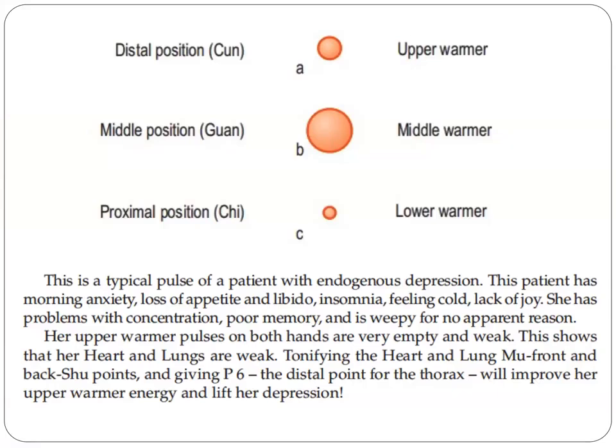Let's take a look at the figure. As you can see, we divide the positions into three warmers: upper warmer, middle warmer, and lower warmer. This is a typical pulse of a patient with endogenous depression. As you can see, the pulse at the middle position is very shallow.